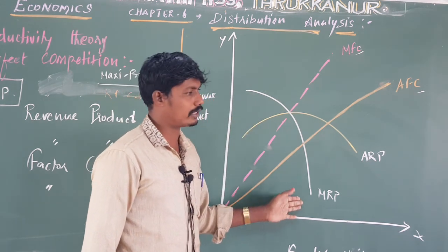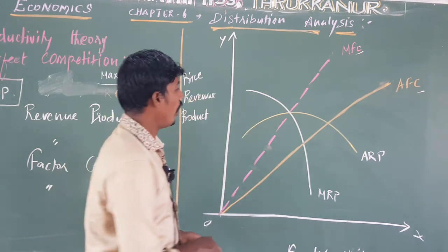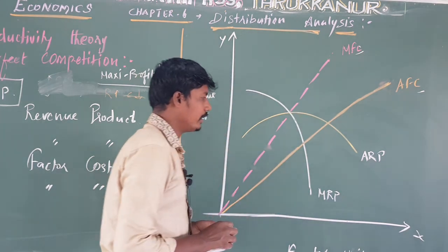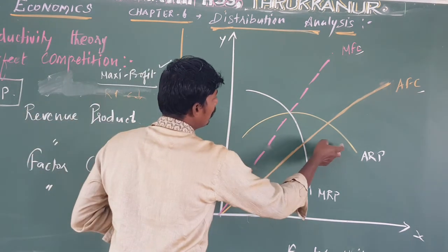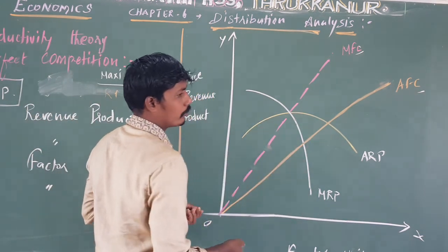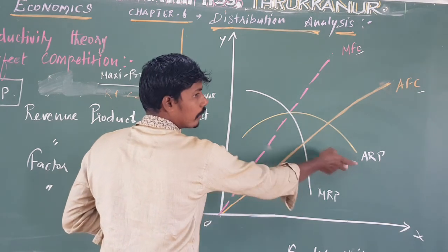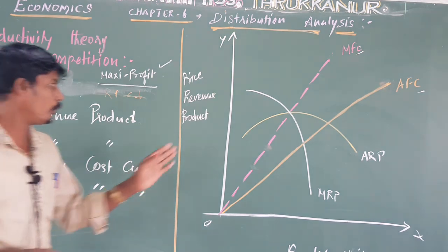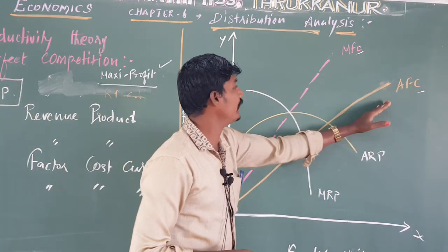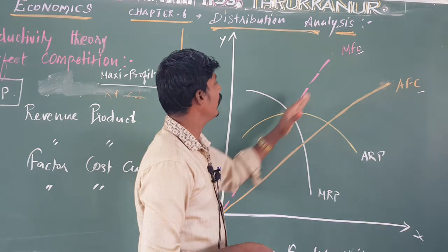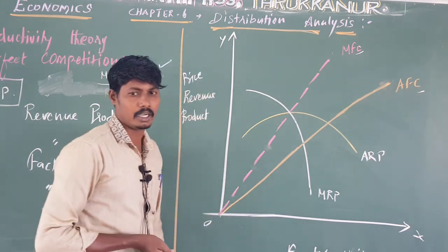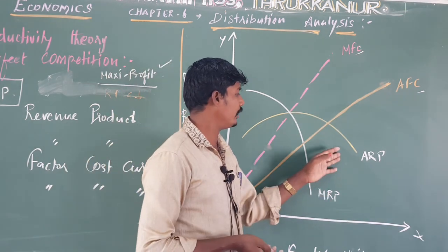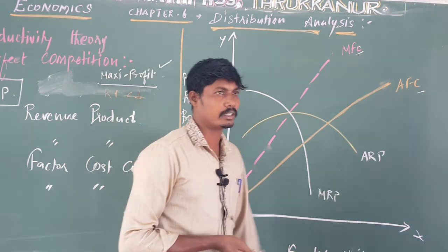What is marginal revenue product? The curves are drawn as an inverse U-shape. This is ARP — average revenue product — and this is MRP — marginal revenue product. On the cost side, this is AFC — average factor cost — and this is MFC — marginal factor cost. So we have two sets of curves: marginal revenue product and average revenue product, plus MFC and AFC.